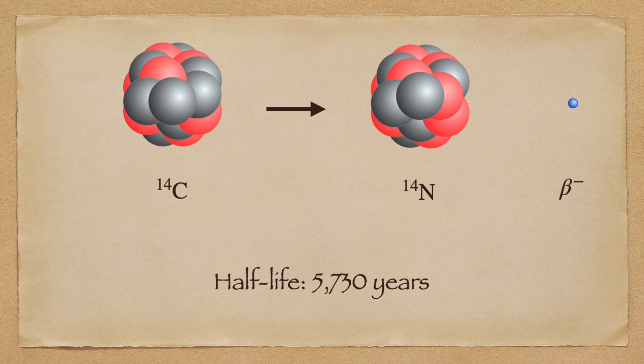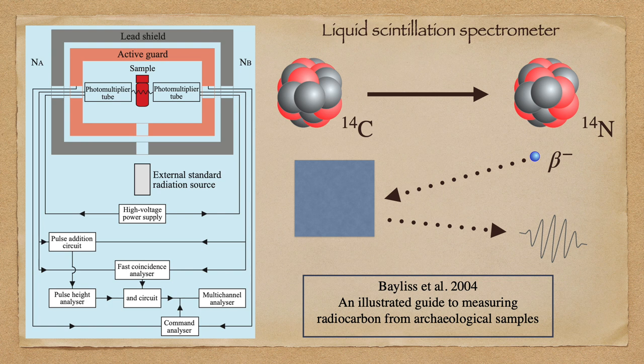The half-life of this process is approximately 5,730 years, which is a lot shorter than the half-lives of the radioactive isotopes used to explore deep geological time, but is still plenty long enough to completely explode young Earth creationism.